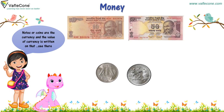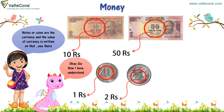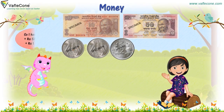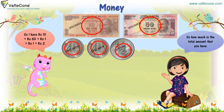See there — 10 rupees, 50 rupees, 1 rupee, 2 rupees. Okay, Jia, now I have understood. So I have rupees 10 plus rupees 50 plus rupees 1 plus rupees 1 plus rupees 2. So, how much is the total amount that you have?